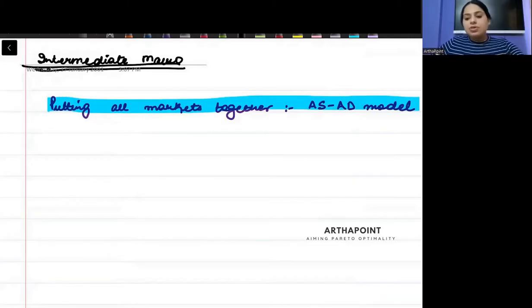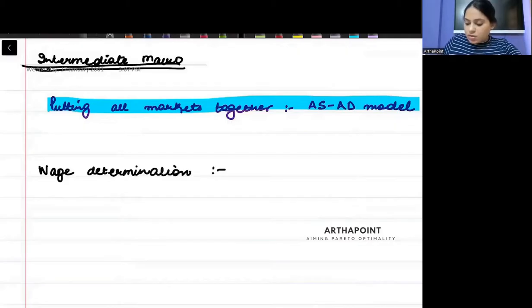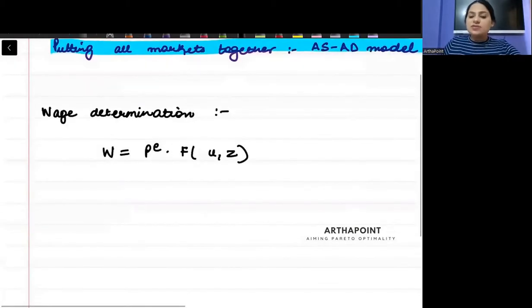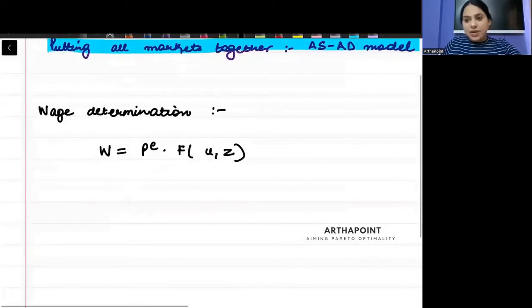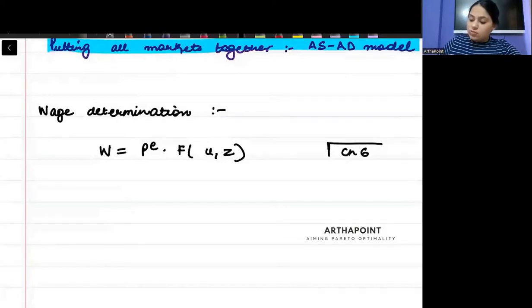But first of all, try and remember what is the wage determination equation that we had learned. How do we determine the wages? This wage determination relation could have been written as W equals P^e times F(u, z). So we said that wages depend on expected price, they depend on unemployment rate, and they depend on the catch-all variable. This is coming from chapter six that I've taught you.